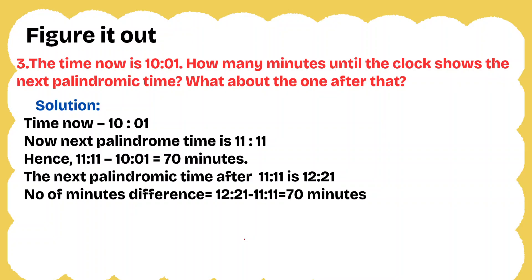Figure it out, Question 3: the time now is 10:01. How many minutes until the clock shows the next palindromic time? The next palindromic time after 10:01 is 11:11. The difference is 70 minutes — because from 10 hours to 11 hours is 60 minutes, and from 1 minute to 11 minutes is 10 minutes, so 60 + 10 = 70 minutes. The next palindromic time after 11:11 is 12:21. The difference is 12:21 minus 11:11 — that is 1 hour and 10 minutes, which is again 70 minutes.